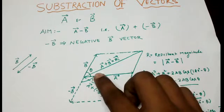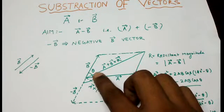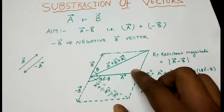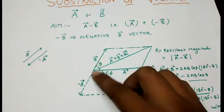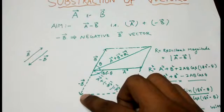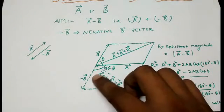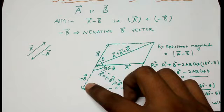Now here A and B are making an angle theta with each other. Now B is produced in backward direction to find out the minus B vector. Here in broken line I have represented it, minus B.